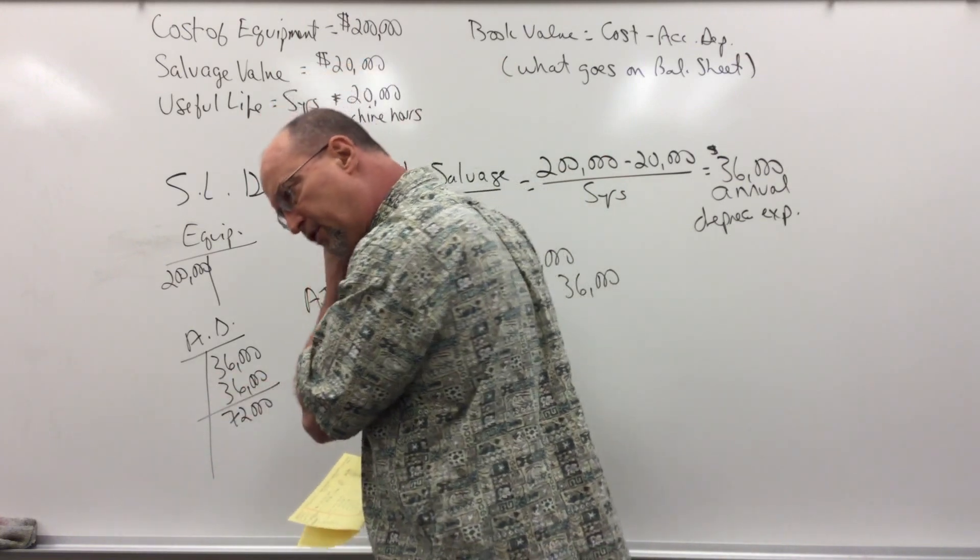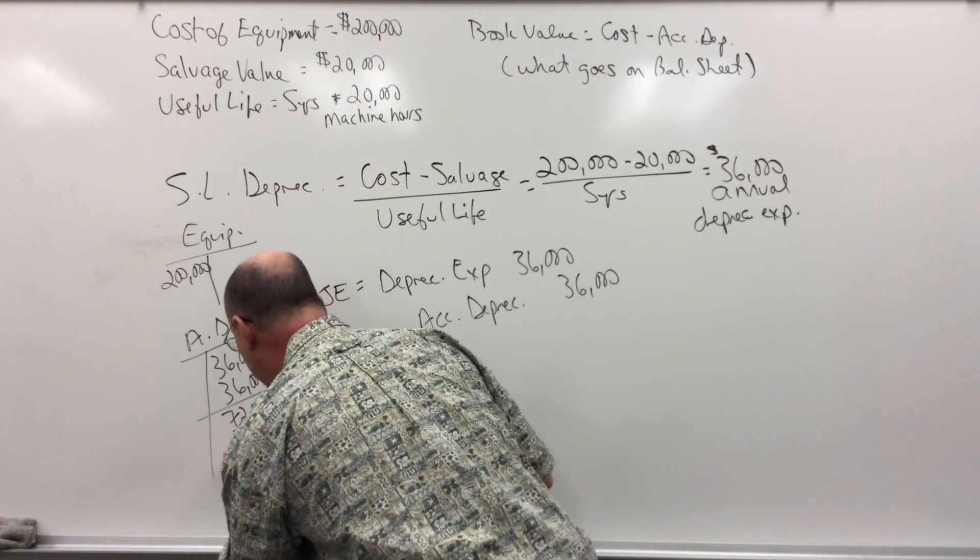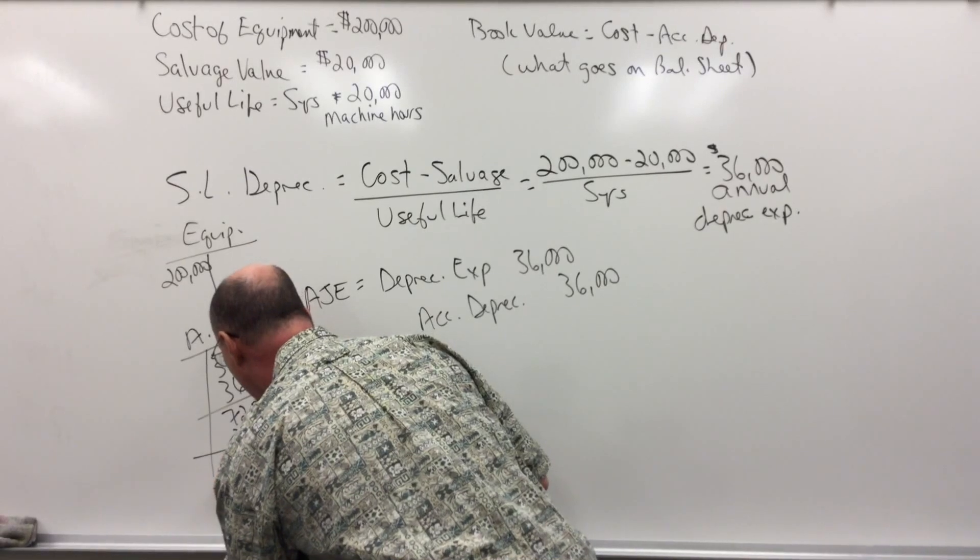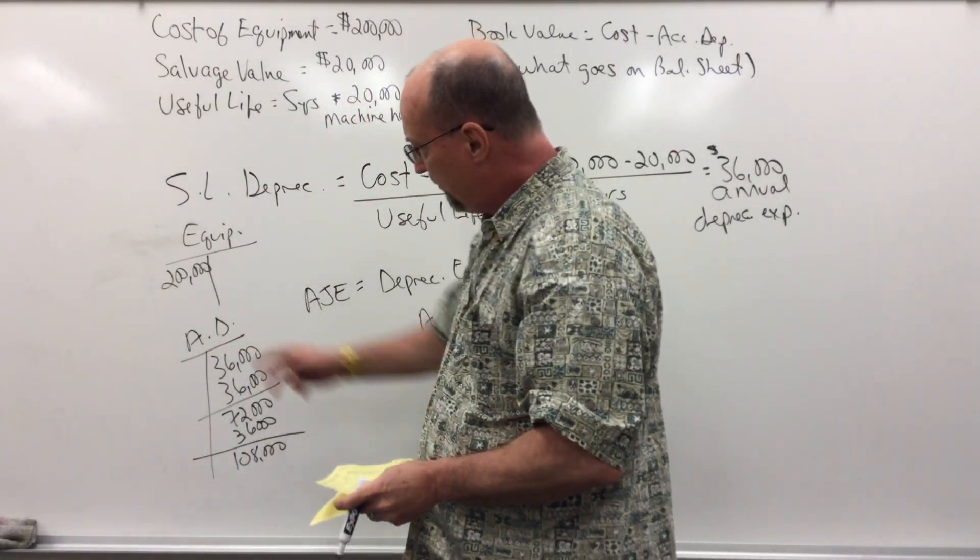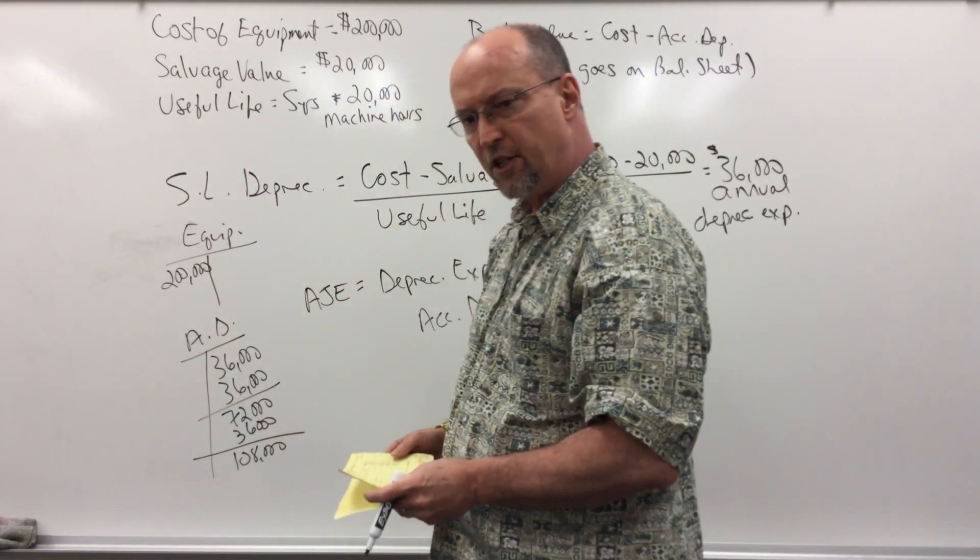End of year three, accumulated is $108,000, so my book value, $200,000 minus $108,000, is $92,000.